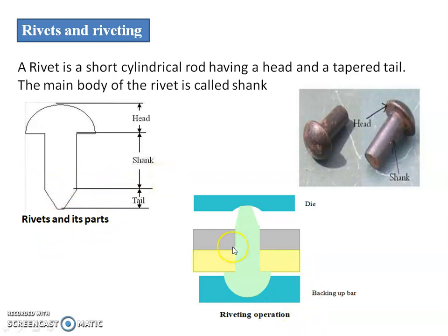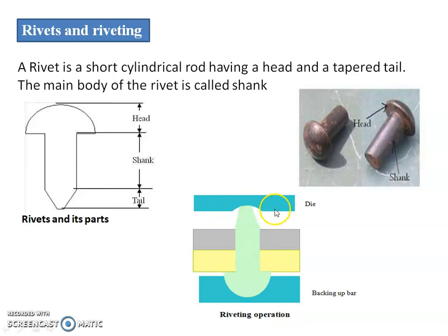Here is how the riveting process works. There is a backing-up bar and a die. We want to establish a tight, leak-proof joint between two plates. The rivet is inserted and the die is used; due to some external force we establish a tight leak-proof joint. Depending on the manufacture and requirement, we can go with hot or cold riveting process.